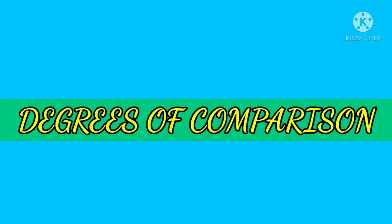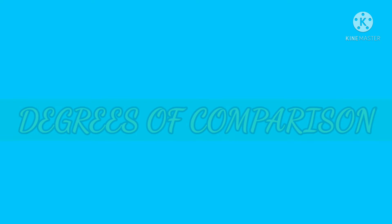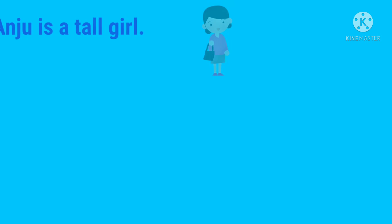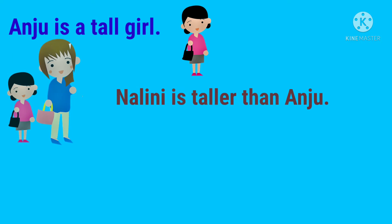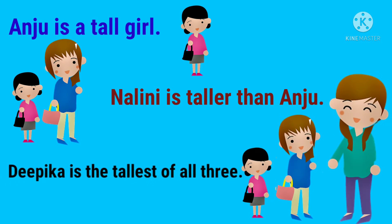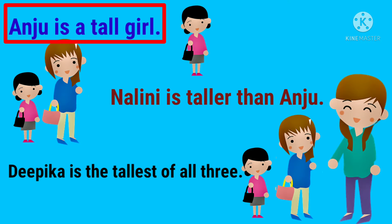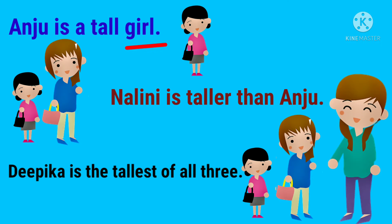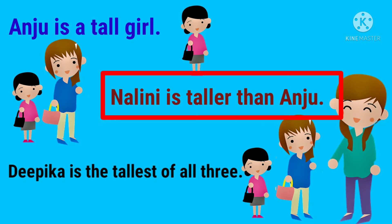So let's get started. Look at these three sentences: 'Anju is a tall girl,' 'Nalini is taller than Anju,' and 'Deepika is the tallest of all three.' Here, the words tall, taller, and tallest are adjectives because they are telling us about the noun. In the first sentence, 'Anju is a tall girl,' the word 'girl' is a noun and 'tall' is an adjective describing that noun.